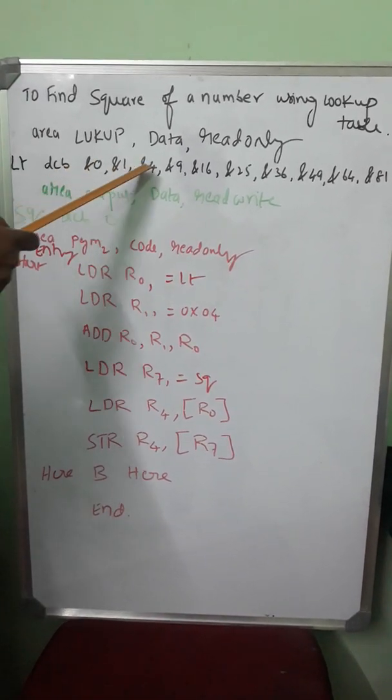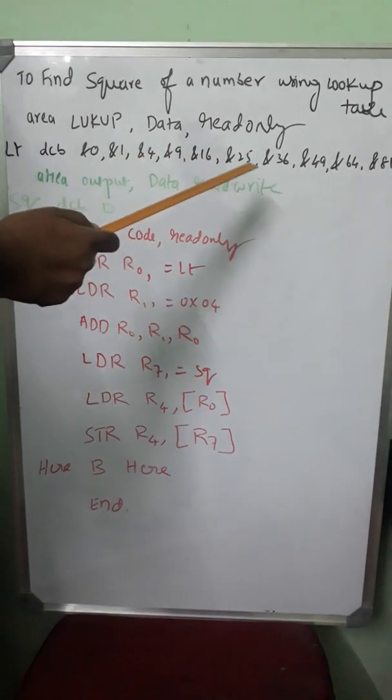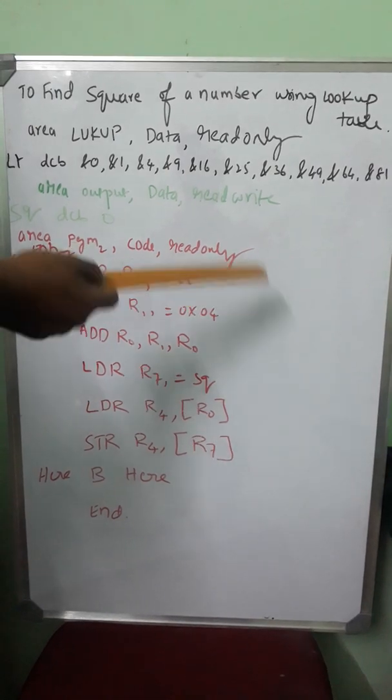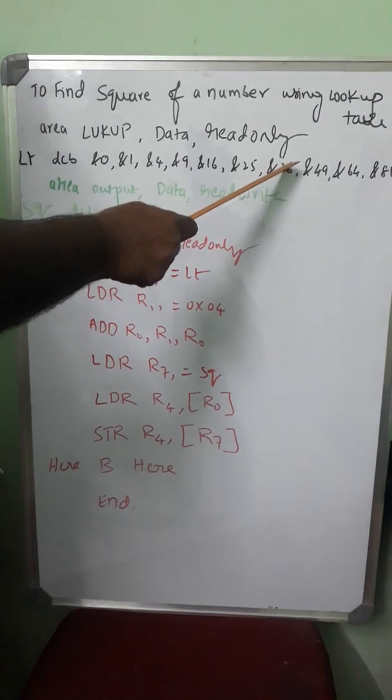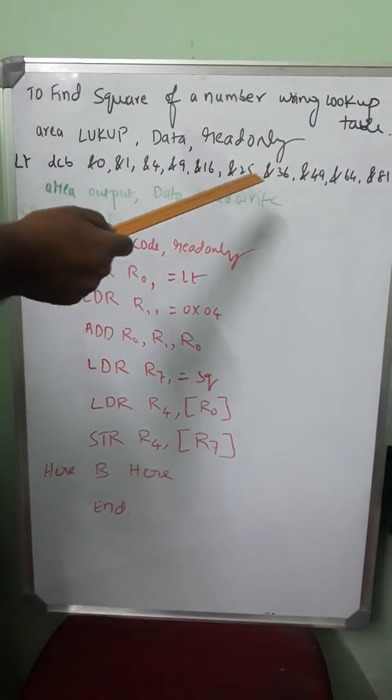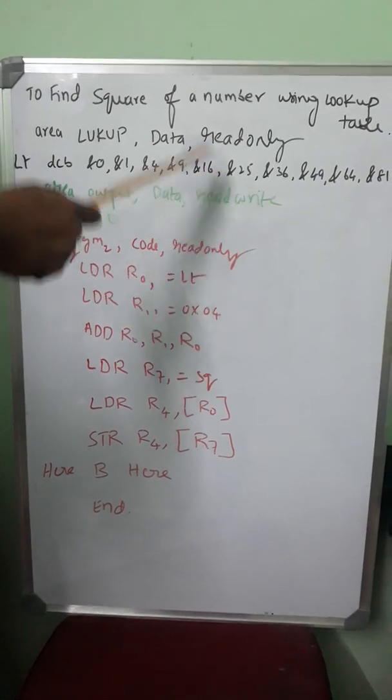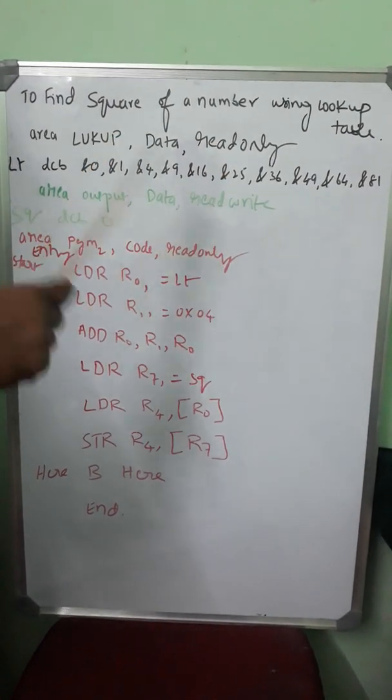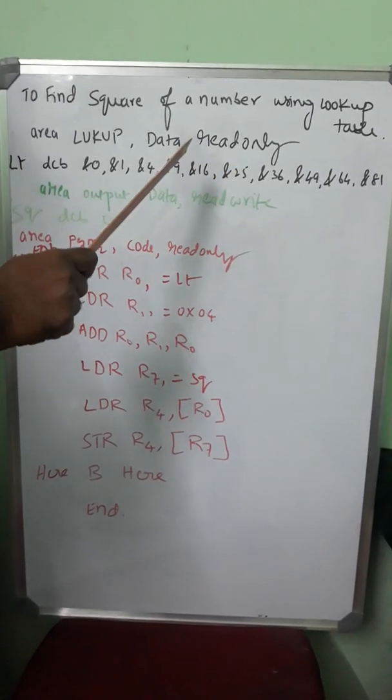Here you can see ampersand has been used. If I had not used ampersand, then 16 will be converted as 10, 25 will be converted as 19, 36 will be converted as 24. Why? Because these numbers will be mistaken as decimal numbers, and assembler voluntarily converts it into hexadecimal, which I do not want.